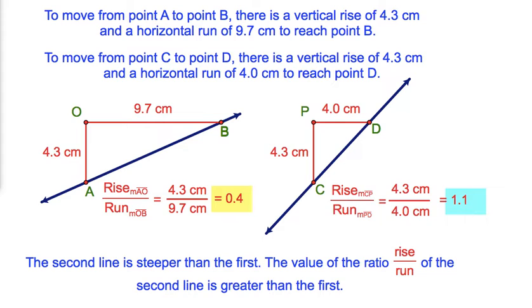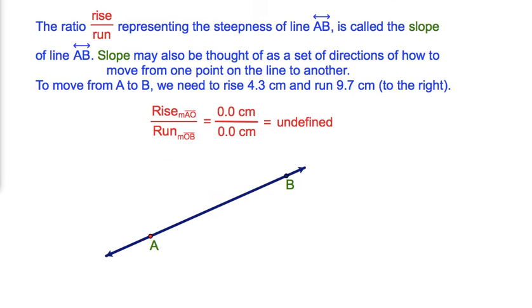The second line is steeper than the first. The value of the ratio of rise to run of the second line is greater than the first. The ratio of rise to run representing the steepness of line AB is called the slope of line AB.